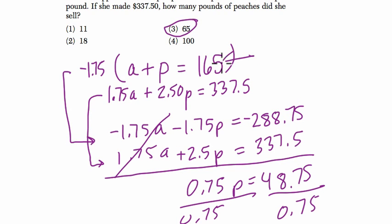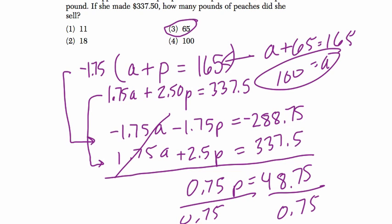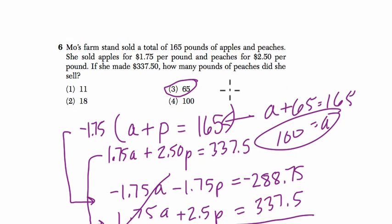If you need to find the number of apples, you can just plug it into the first equation. Apples plus 65 peaches equals 165, and that means there's 100 apples, right? Because 100 plus 65 is 165. Notice they put that choice here, kind of tricky, in choice four. But we're not interested in apples here, just peaches. Thanks.